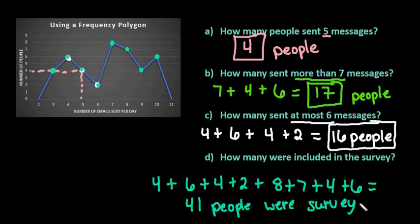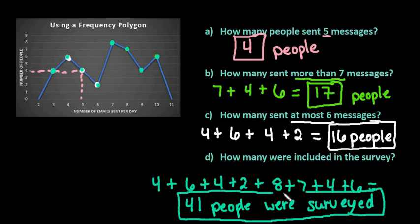So the biggest thing with this to pay attention to is whether or not it includes the value that is given. So if it says things like at most or at least then it includes it. If it says less than or greater than or more than, then it does not include that value so you would make sure that you don't include that value in your counts.